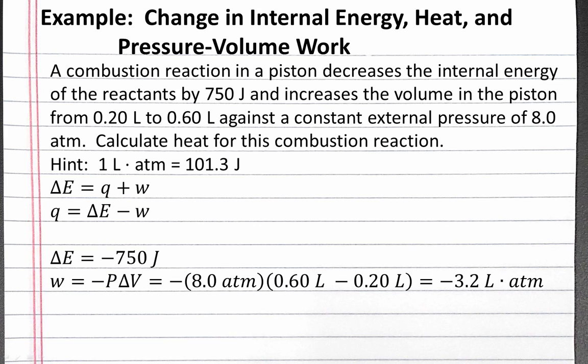But we need to change liter atmospheres into joules in order to plug it into our equation for q. So we can use dimensional analysis to convert negative 3.2 liter atmospheres into joules using the conversion factor given in our hint. And that comes out to negative 324 joules.